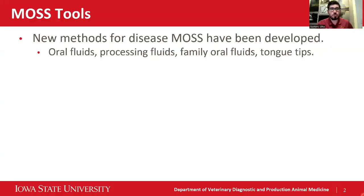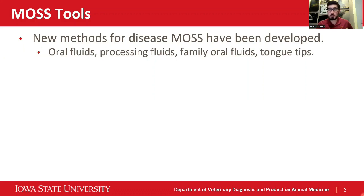Let's briefly talk about monitoring and surveillance tools. A lot of tools have been developed and most focus on new methods to detect pathogens. More specifically, we will be focused on PRRS. Looking back, there has been a lot of development and we can name oral fluids, processing fluids, femoral fluids, and more recently tongue tips — different sample types to detect disease.